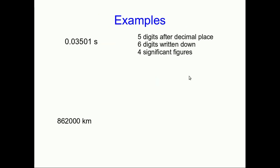Look at this first number that I've written, 0.03501 seconds. I'm going to tell you it has five digits after the decimal place. Well, just count them. And there are six digits written down because there's the zero before the decimal place. But it only has four significant figures. Those first zeros are not significant figures. They're placeholder zeros.